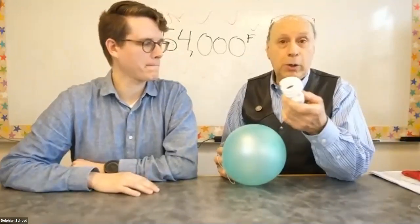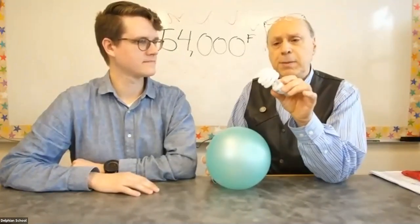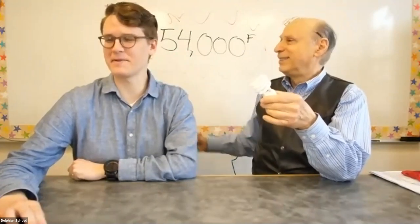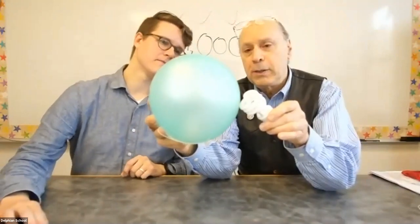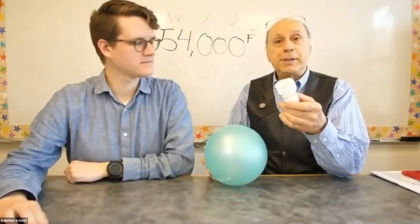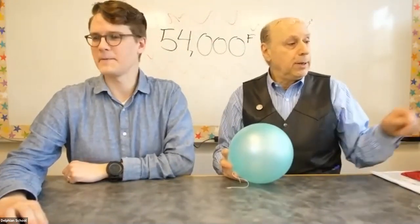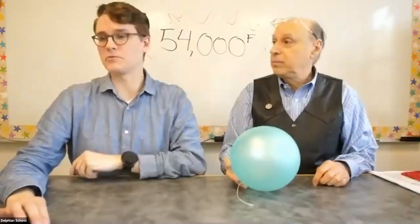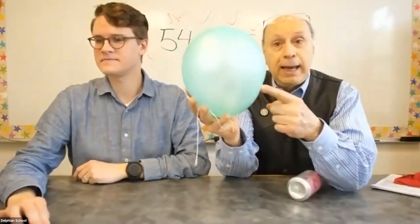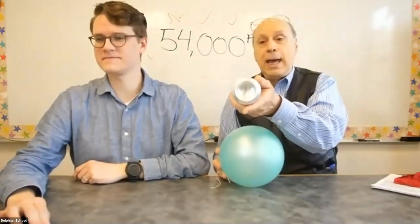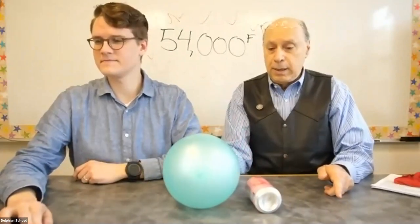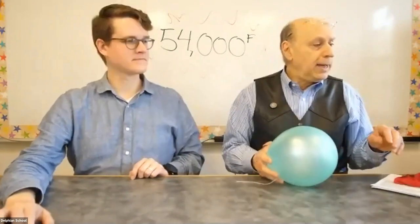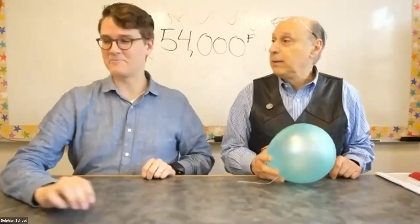If you have a fluorescent bulb like this, rub it — if you do this in a dark room, you'll be able to see it light up. A lot of people in the Q&A are saying static electricity is what made the can roll around. Right — the balloon had extra negative electrons, and the can had positive and negative charges. The positives in the can were attracted to the negatives in the balloon. That's cool — this is something you could do at home.